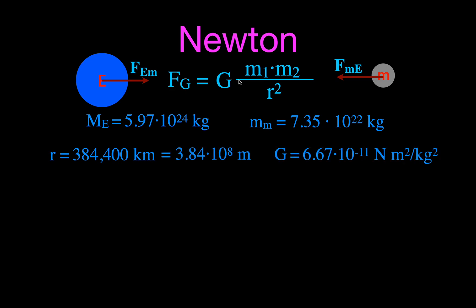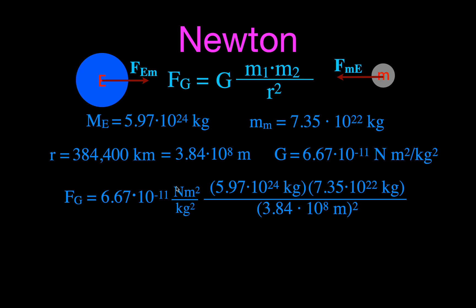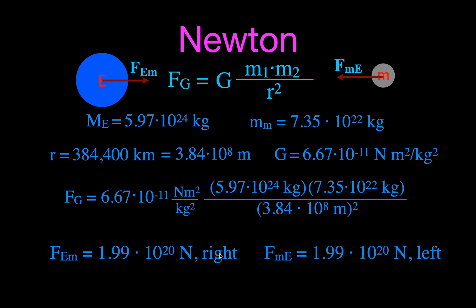The Earth has a mass of 5.97 × 10²⁴ kg, and the Moon is 7.35 × 10²² kg. The distance between them must be converted to meters because the gravitational constant uses meters: that's 3.84 × 10⁸ m. Plugging everything into the equation — G times M₁ times M₂ divided by R² — we get that the force on the Earth from the Moon is 1.99 × 10²⁰ newtons to the right, and the force on the Moon from the Earth is the same magnitude in the opposite direction.